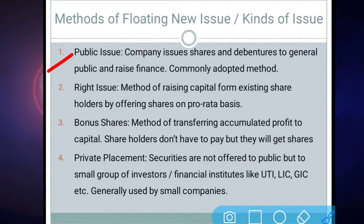There are certain advantages that a company may enjoy if they issue through public issue. First, the company may offer their shares to a large section of people — a large group of people can be addressed through public issue. Secondly, it is a very commonly adopted method whenever a company wants to raise finance. Further, it is a direct method and hence does not involve any kind of intermediaries. Finally, the shares issued through this method can be offered to a large section of people without any kind of discrimination.